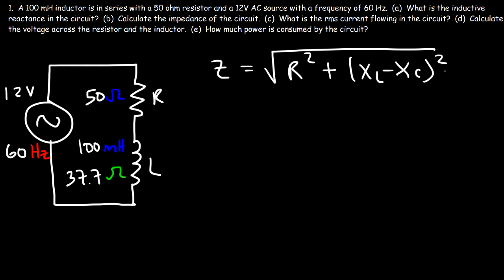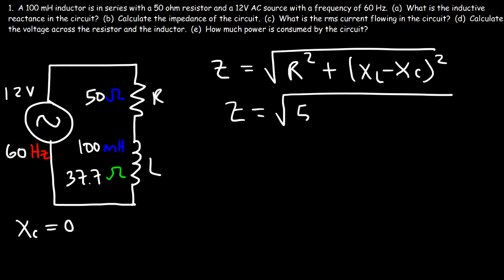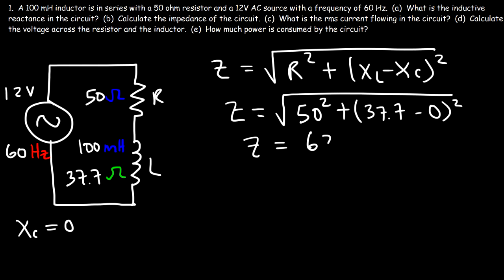XL represents the inductive reactance and XC represents the capacitive reactance. We don't have any capacitors in this circuit, so XC equals zero. Therefore Z equals the square root of R squared plus XL squared — that's the square root of 50 squared plus 37.7 squared. The impedance of the circuit is 62.6 ohms.